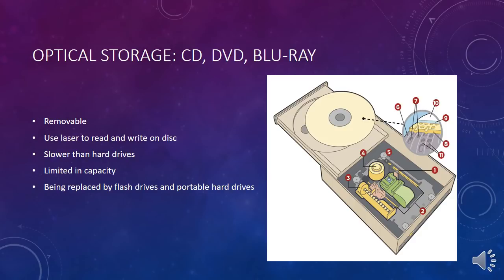Optical storage is removable — you can put CDs and DVDs in and out of the machine. They use a laser to read and write on the disk, hence the name optical. They are slower than hard drives and limited in capacity: a CD holds up to about 700 megabytes and a DVD a little more. Optical discs are becoming less and less popular, being replaced by flash drives and portable hard drives.